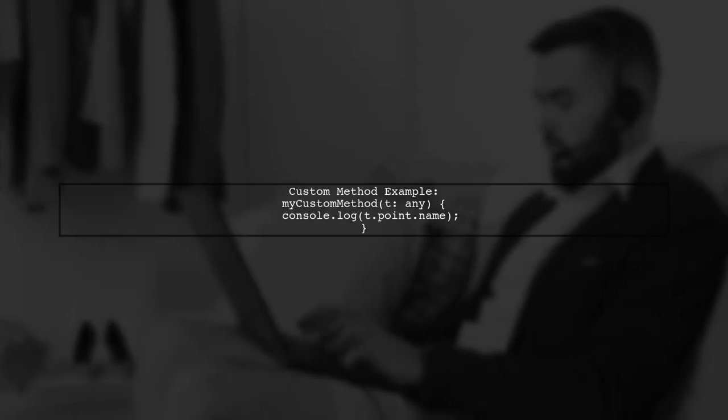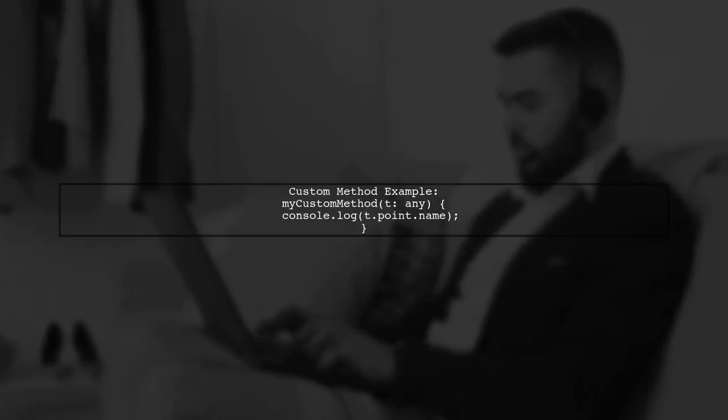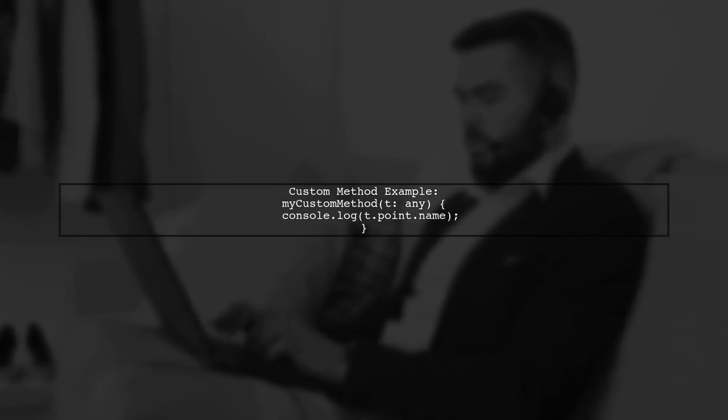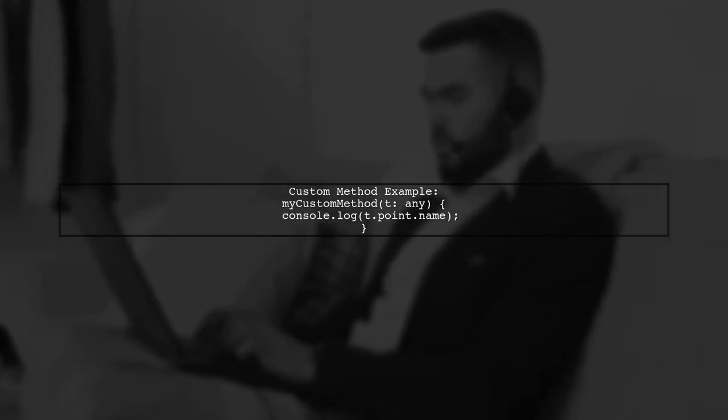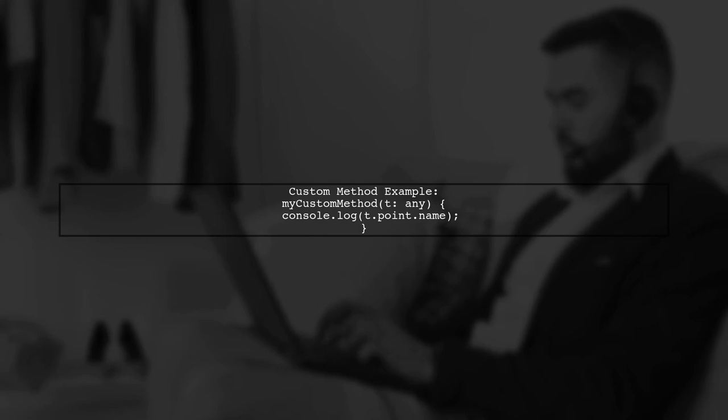In your custom method, you can access the clicked point's data. For example, you can log the name of the clicked point to the console.